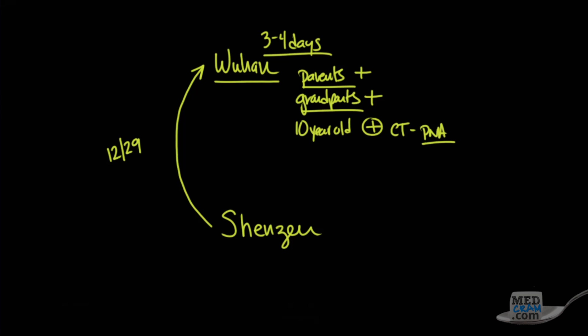Interestingly, a couple of points that I want to show is it only took about three to four days to show symptoms in the parents and the grandparents. That's a pretty short incubation period. So this 10-year-old shows that it's possible, and I think this is the basis for the health minister in China saying that there may be some cases where this can spread even though people may be asymptomatic.